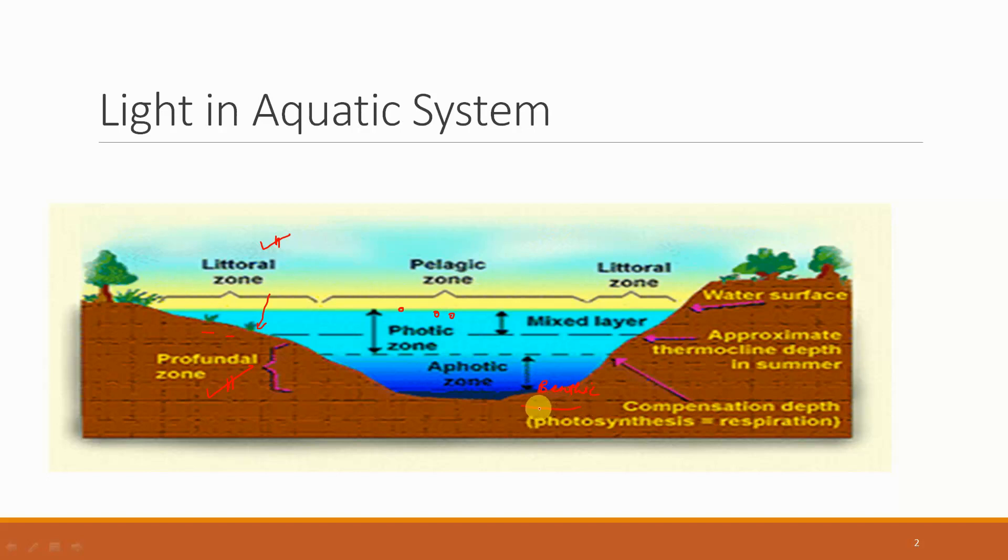So these are the important zones: the littoral zone with rooted vegetation, pelagic or liminetic zone with phytoplankton growth, profundal zone without any light, and the benthic zone. These are the zones divided in an aquatic system based on light.